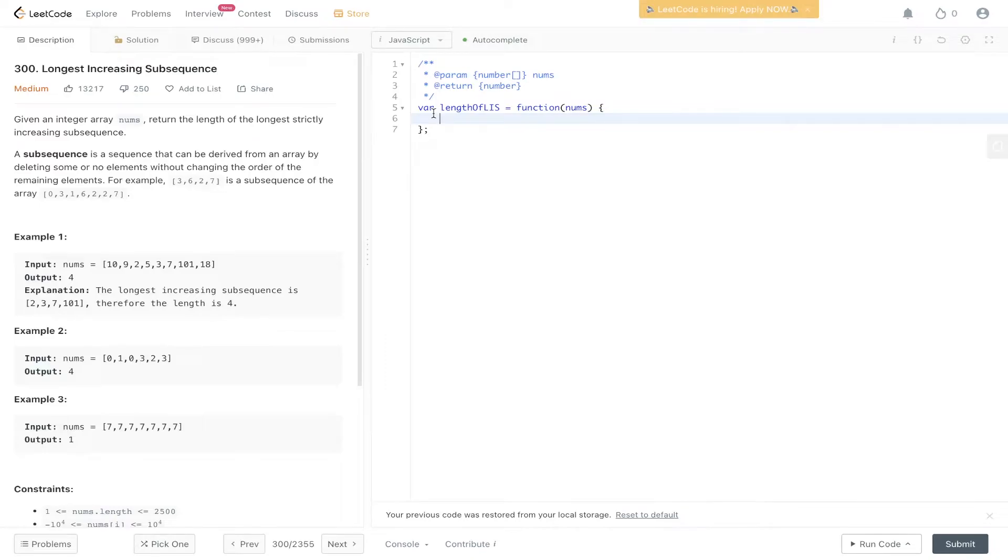Welcome back to our JS. Today's question is LeetCode 300, longest increasing subsequence. Given an integer array nums, return the length of the longest strictly increasing subsequence. A subsequence is a sequence that can be derived from an array by deleting some or no elements without changing the order of the remaining elements.